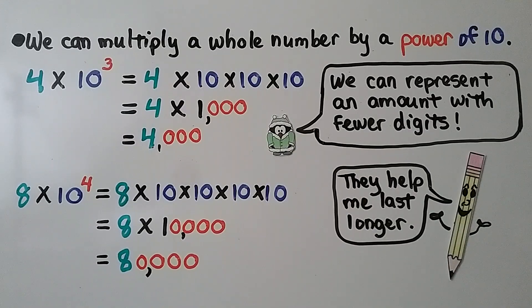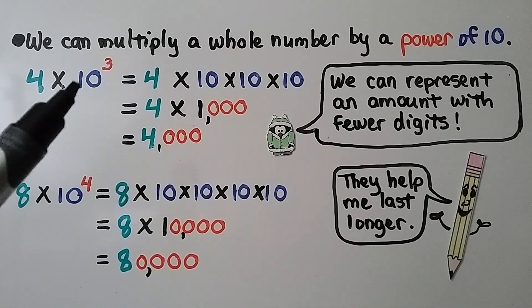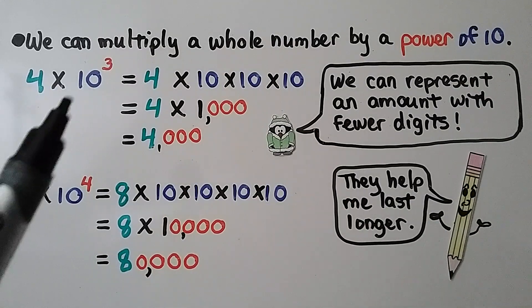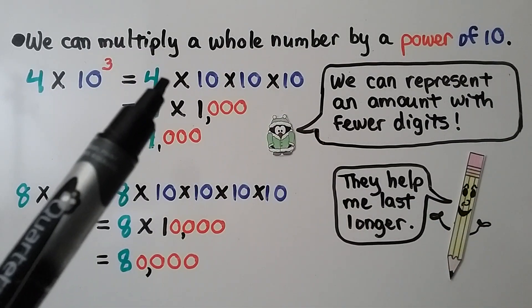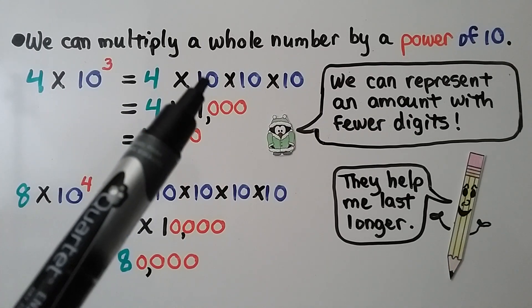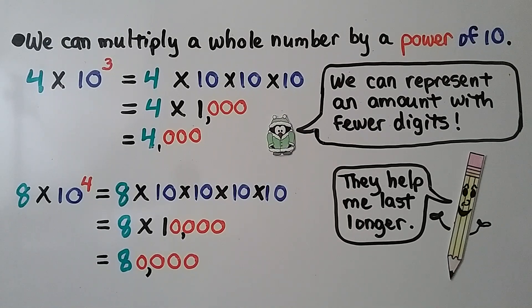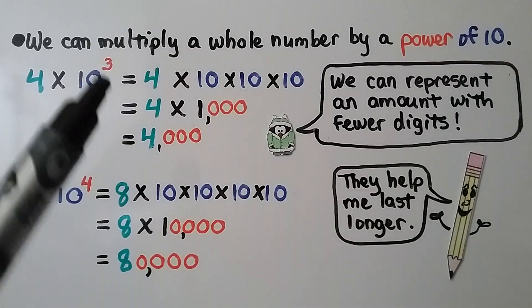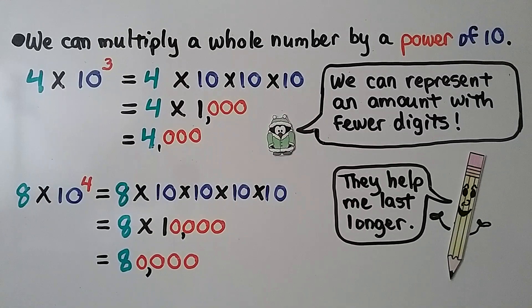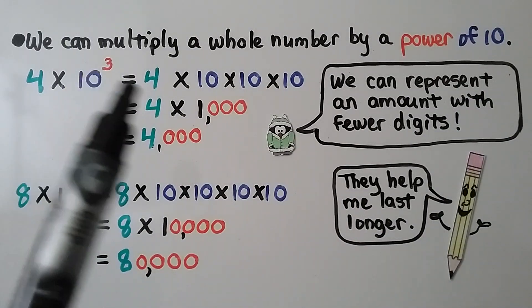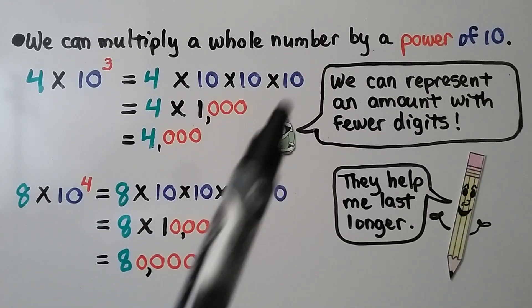We can multiply a whole number by a power of 10. Here's the whole number 4, multiplied by 10 to the third power. We have 4 times 3 factors of 10 — 10 times 10 times 10 — that's 4 times 1,000, which equals 4,000. So we have a 4 followed by 3 zeros. It's much easier to write 4 times 10 to the third power than 4 times 10 times 10 times 10.